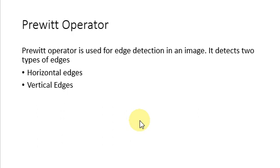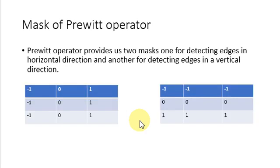There are some edge detection techniques — for example, the Sobel operator, the Prewitt operator, and the Canny operator. Here we will discuss two operators. The first one is the Prewitt operator, which is used for edge detection in an image. It detects two types of edges: horizontal edges and vertical edges. Edges are calculated using the difference between corresponding pixel intensities of an image. All masks used for edge detection are known as derivative masks, because image is also a signal and changes in a signal can only be calculated using differentiation. That is why these operators are also called derivative operators or derivative masks.